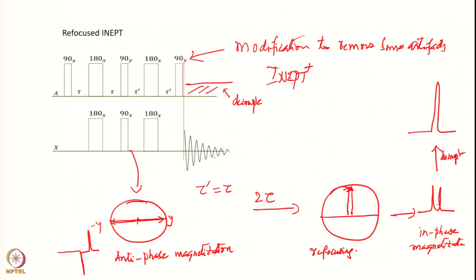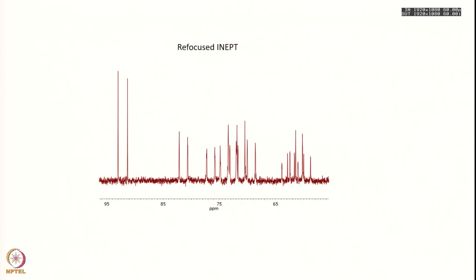The proton can be decoupled while observing X. You get a huge gain because the splitting is gone — the one-bond coupling is not needed, so you remove it. You then get a single line for the particular carbon, nitrogen, or whatever nucleus you are observing. There is substantial gain in signal-to-noise ratio, all multiplicity structures are retained, and there are no problems with missing peaks. This is the ideal technique — here is a practical spectrum showing all in-phase lines with much higher signal-to-noise ratios.